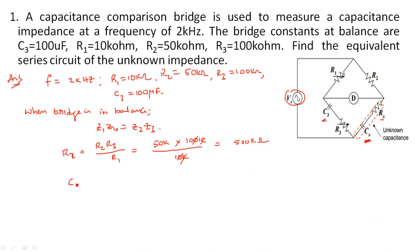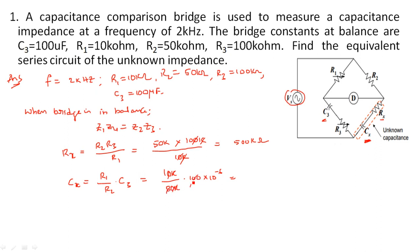Similarly, Cx = (R1 / R2) · C3. Substituting: R1 = 10 kΩ, R2 = 50 kΩ, C3 = 100 μF (= 100 × 10⁻⁶). The kilo units cancel, and 10/50 = 1/5, so Cx = 20 μF.